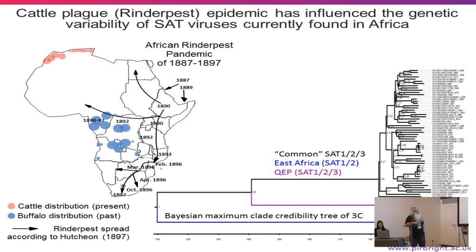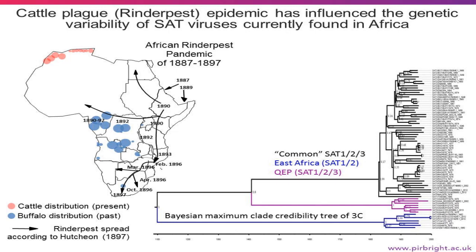This Bayesian tree shows the southern African, East African, and Queen Elizabeth National Park viruses are very, very different. This is of the 3C protease. When foot and mouth re-emerged in Africa, the SATs re-emerged in southern Africa in the 1930s and in various other places at various times. It's thought that in southeast Uganda and places in East Africa, the viruses here are a remnant of a much wider distribution of quite distinct viruses across Africa. If you look at any geographically distinct places — we've looked at Mozambique — you find quite different viruses.